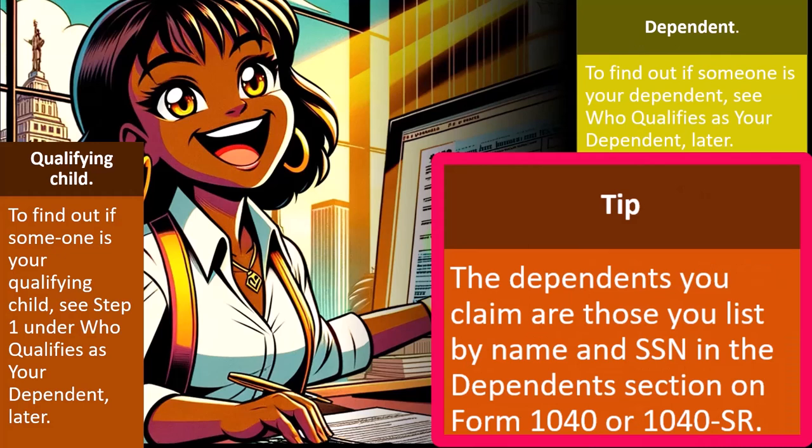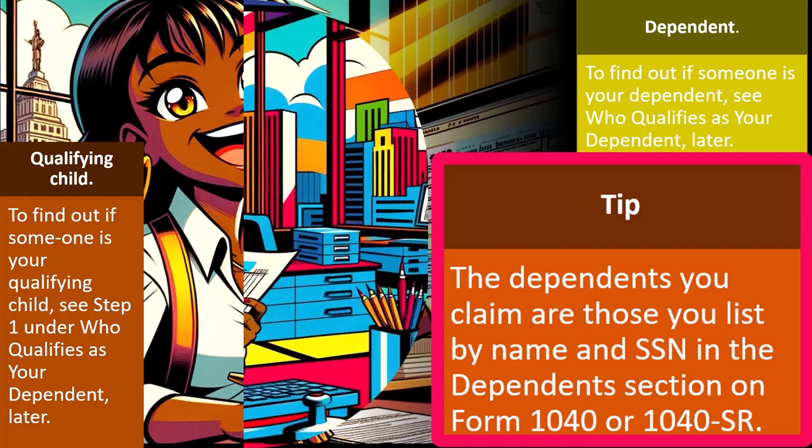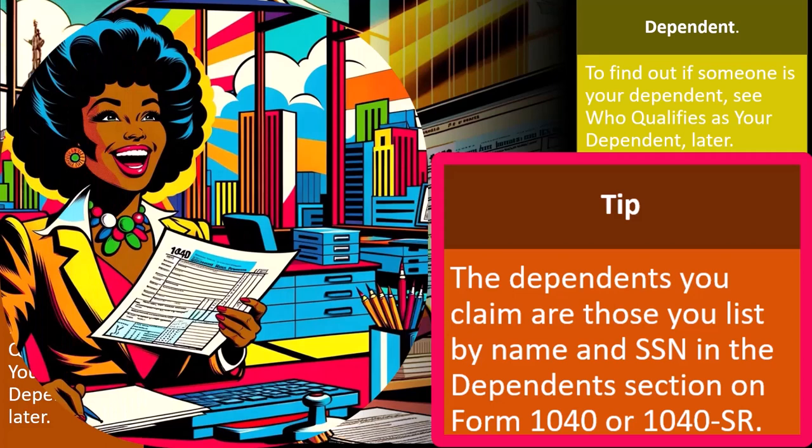Tip: the dependents you claim are those you list by name and social security number in the dependents section on Form 1040 and 1040-SR. In other words, the general process is that if someone is a dependent, you put them on the first page of Form 1040 in the dependents area, listing their names and social security numbers so the IRS can determine who they are.